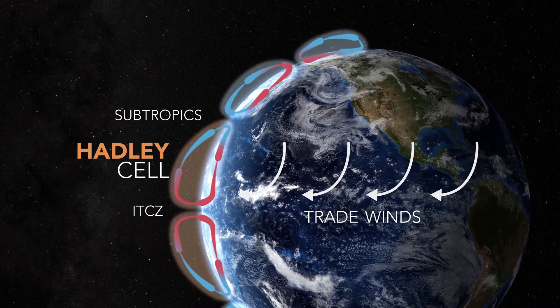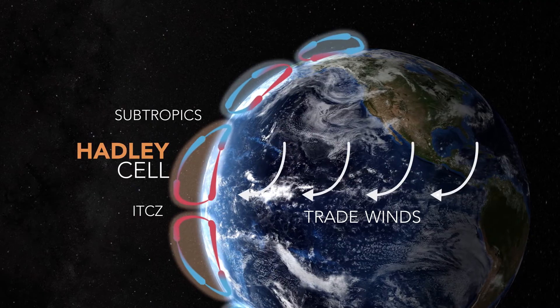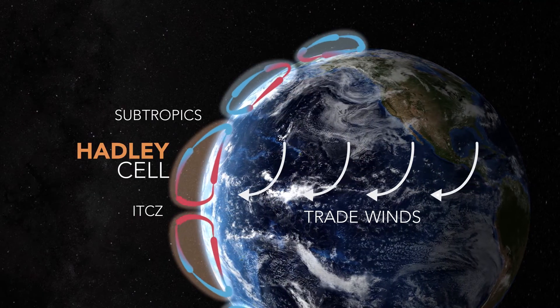A band of easterly winds, known as the trade winds, form between the rising and the descending branches due to the rotation of the Earth.